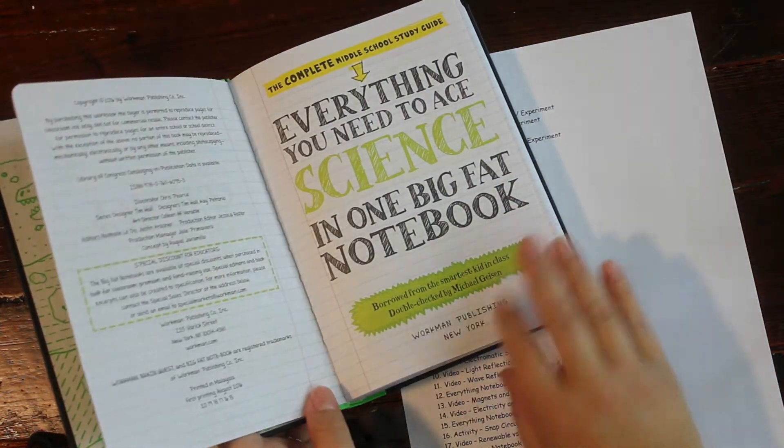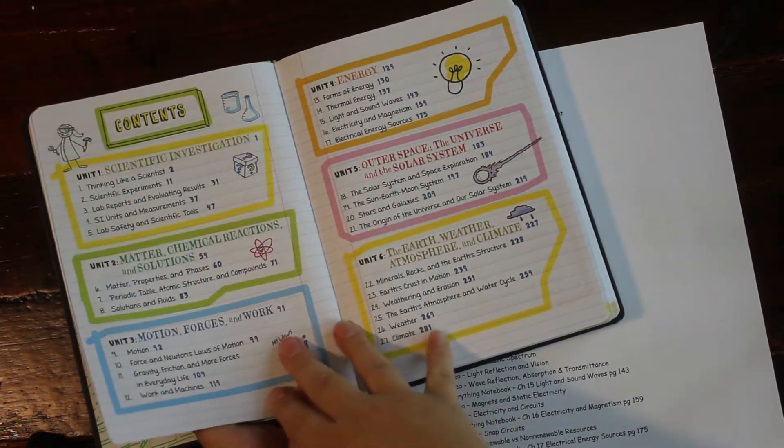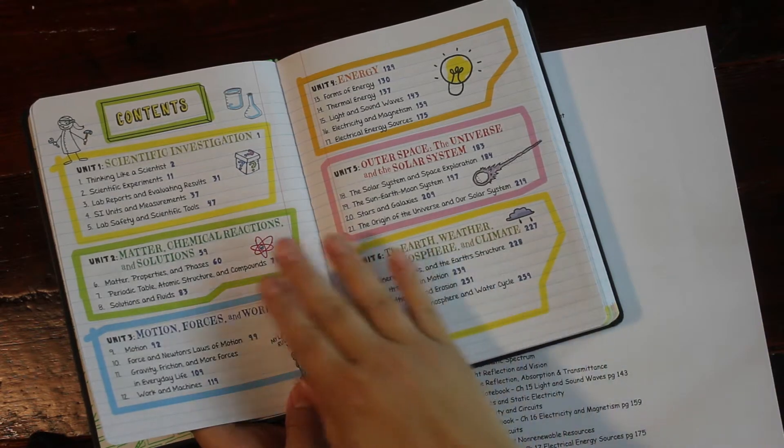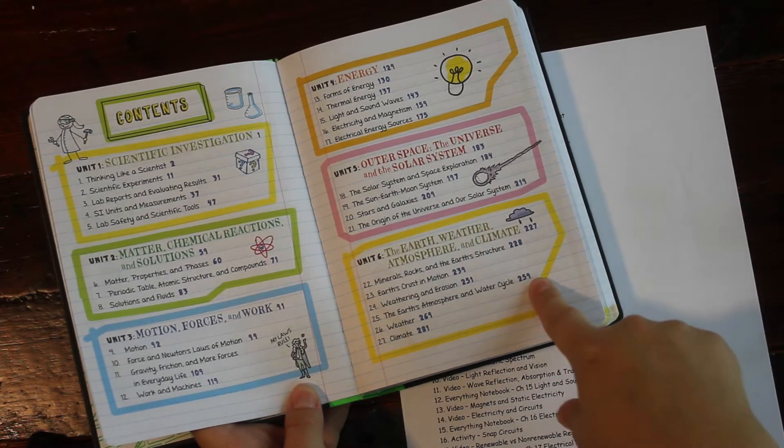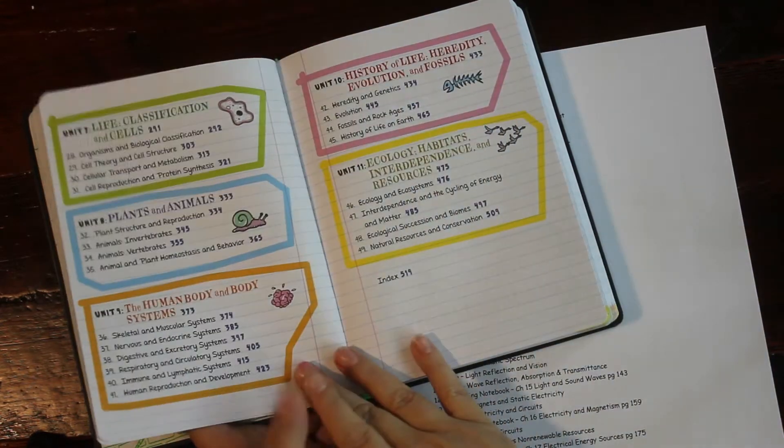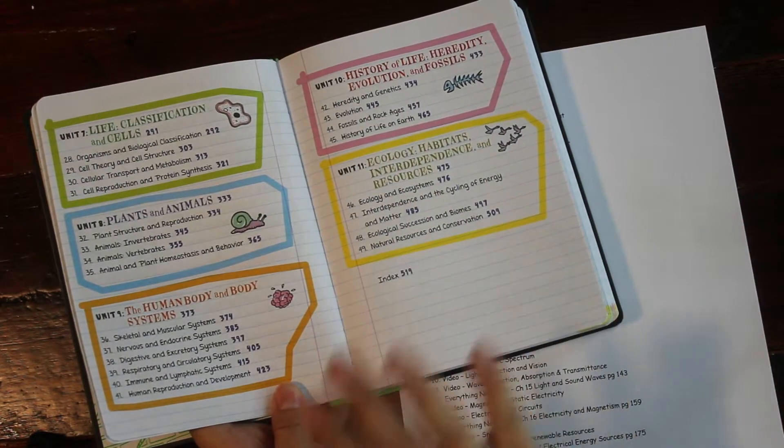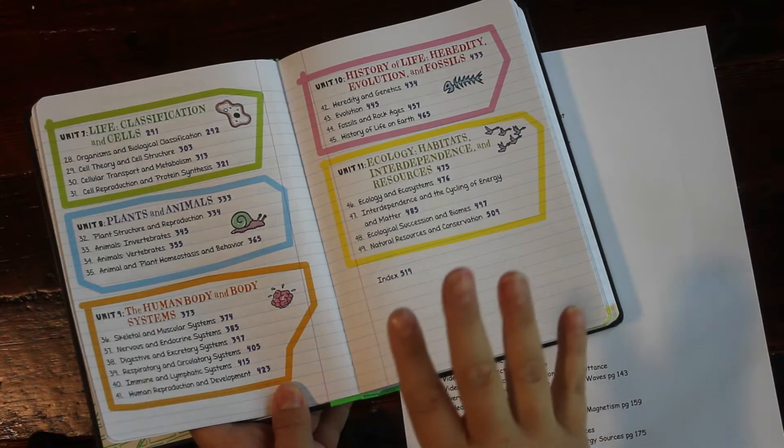I love that this everything notebook has all middle school science in it. So it has chemistry, it has physics, it has earth and space, and it's all covered in here. Biology, all of it.